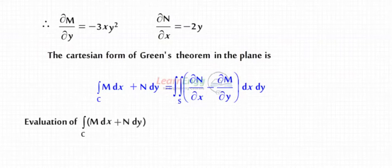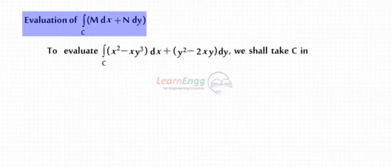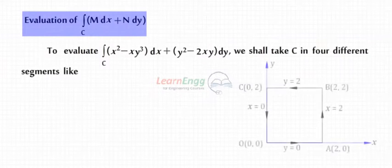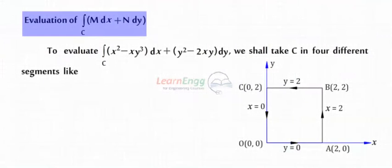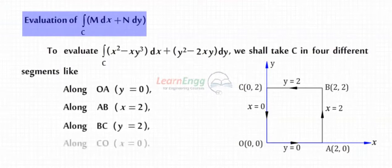Evaluation of the closed integral M dx plus N dy. To evaluate the closed integral of (x squared minus xy cubed) dx plus (y squared minus 2xy) dy, we take C in four different segments: along OA, y equals 0; along AB, x equals 2; along BC, y equals 2; along CO, x equals 0.